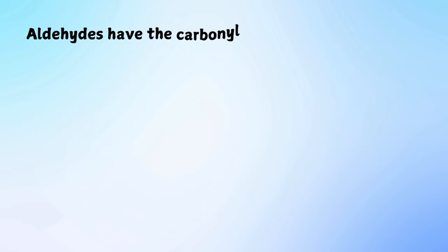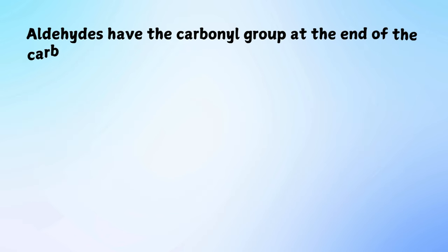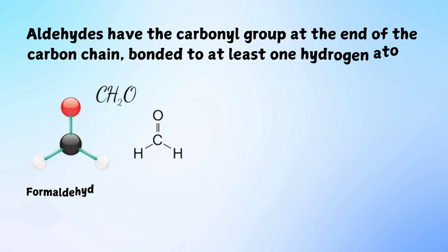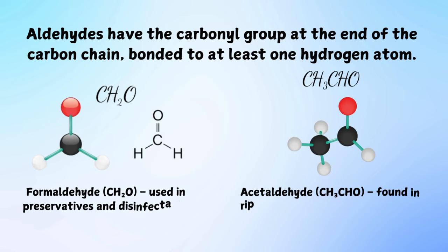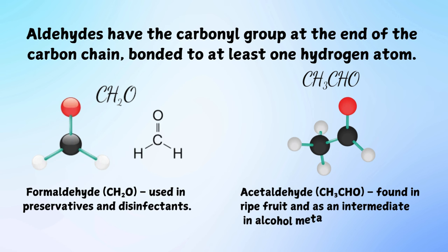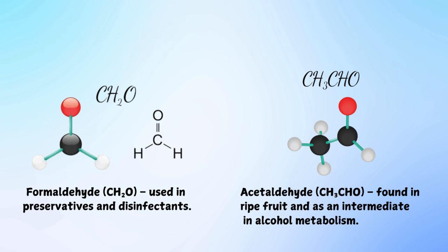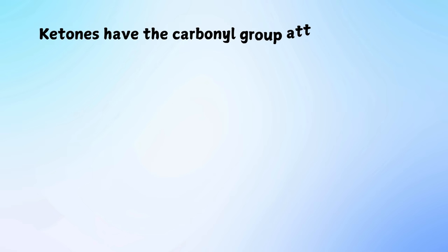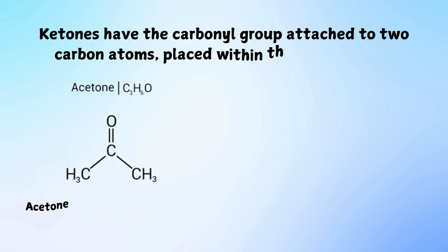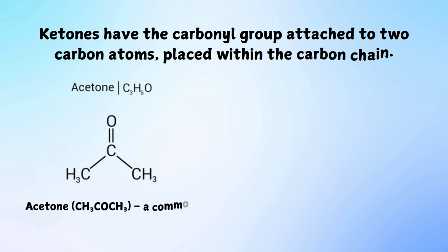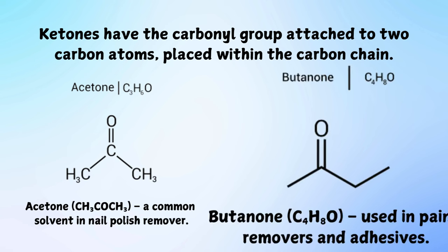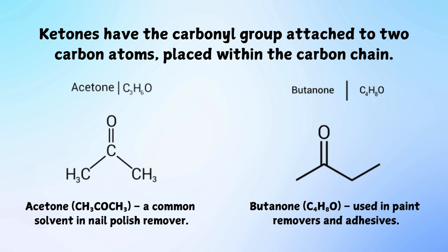Aldehydes have the carbonyl group at the end of the carbon chain, bonded to at least one hydrogen atom. Formaldehyde is used in preservatives and disinfectants, and acetaldehyde is found in ripe fruit and as an intermediate in alcohol metabolism. Ketones have the carbonyl group attached to two carbon atoms placed within the carbon chain. Examples include acetone, a common solvent in nail polish remover, and butanone, used in paint removers and adhesives.